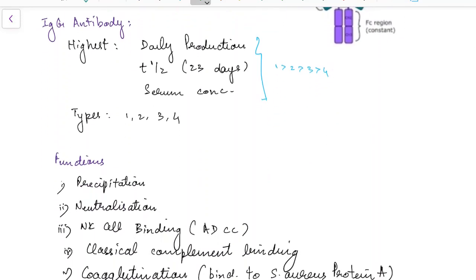Now let us see about IgG antibody in detail. IgG antibody has the highest daily production, highest half-life of 23 days, and the highest serum concentration. There are four types of IgG antibody: they are types 1, 2, 3, and 4.